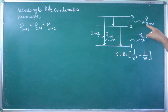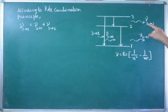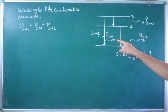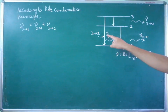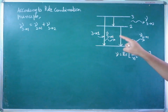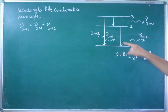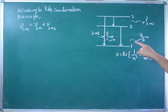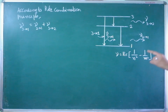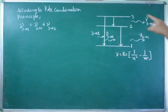One photon is emitted with frequency written as nu 3 to 2. Another photon is emitted with frequency mentioned as nu 3 to 1. Another transition is taking place from 2 to 1, where one photon is emitted in the form of radiation with frequency called nu 2 to 1. Here, we have to prove the Ritz combination principle — the transitions are obeying the Ritz combination principle.